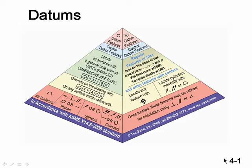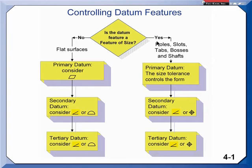Now that we know how to identify datum features, we can talk about how to control datum features, and that's really what this chapter is all about. There's a flowchart on the very first page of the chapter. In this flowchart, it first asks if you're dealing with a feature of size.